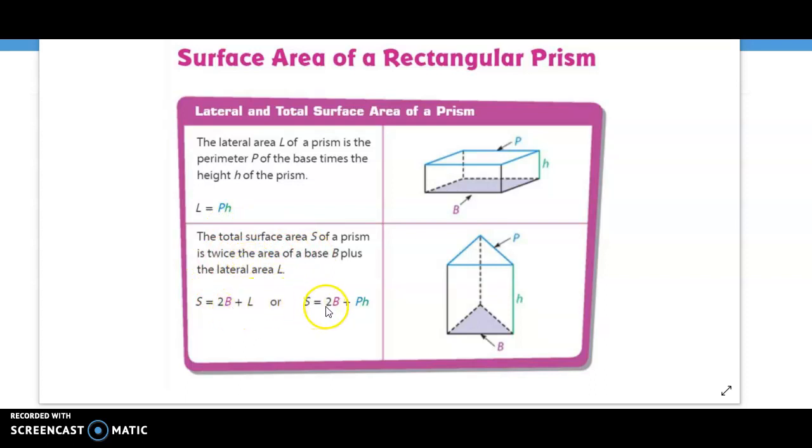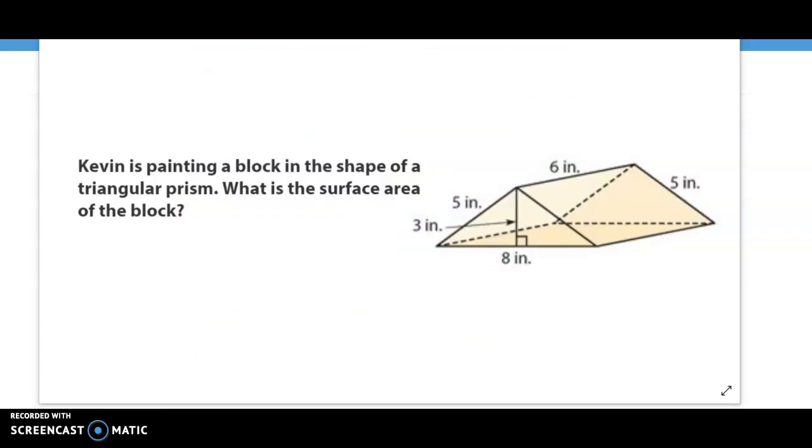Again, two times big B plus the perimeter of the base times the height is going to give us the total surface area. It may be a little bit confusing at this moment, but we're going to put it into practice. The first thing that we need to do is we need to orient ourselves with this particular prism.